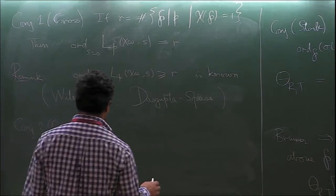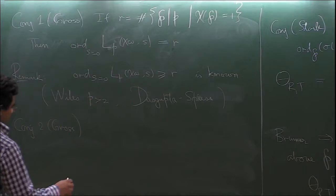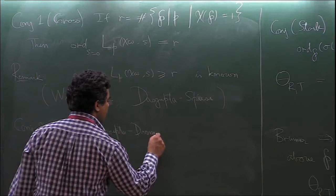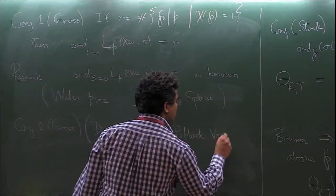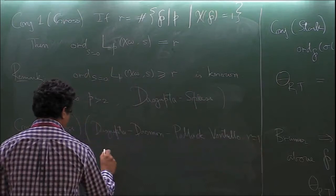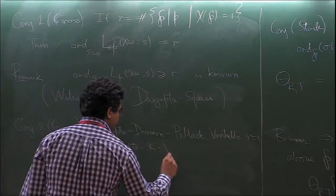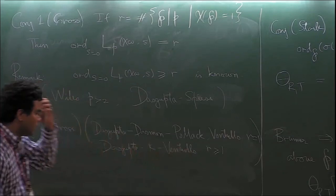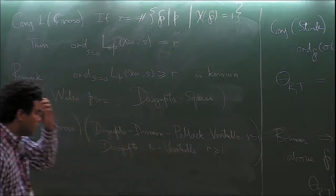This is conjecture two — the Gross-Stark conjecture — which tells you what the R-th derivative of this L-function is. This is now a theorem: due to Das Gupta, Darmon, and Pollack and Ventullo when R = 1, and due to Das Gupta, myself, and Ventullo in general (R > 1). Conceptually there is much overlap between the two cases, but even in the R = 1 case there is a conceptual difference in the third part of the proof.